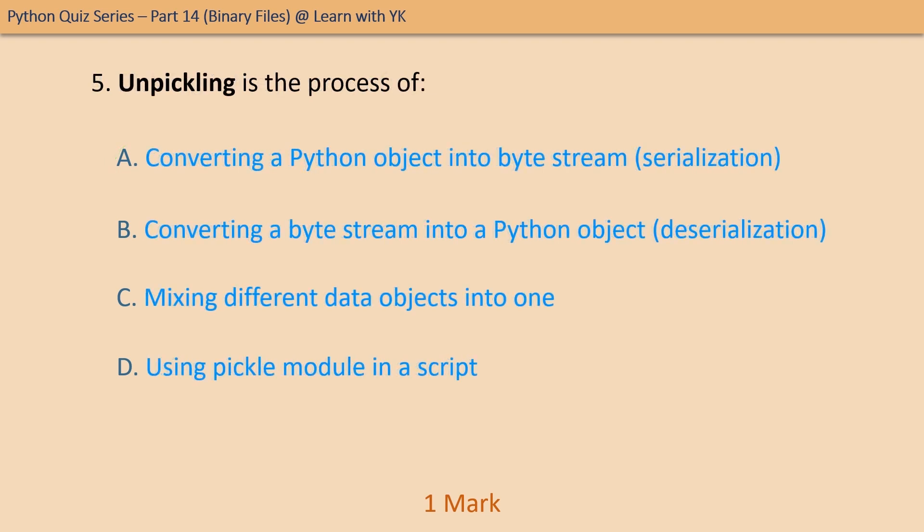Question number five: unpickling is the process of — choose the correct option. The correct option is option B — it is the process of converting a byte stream into a Python object. It is just the reverse of pickling, so it is also known as deserialization.